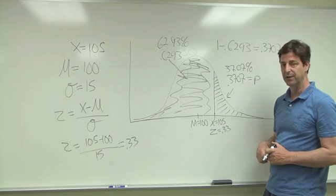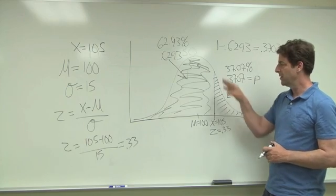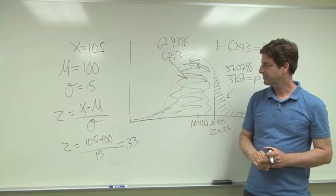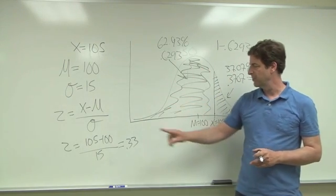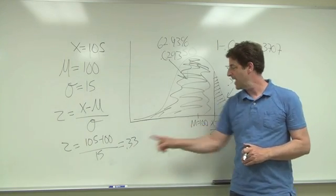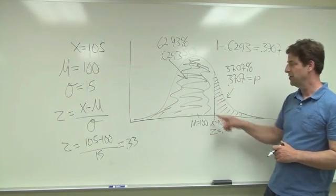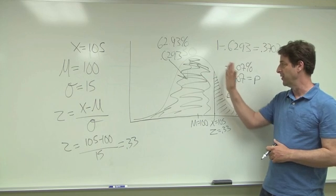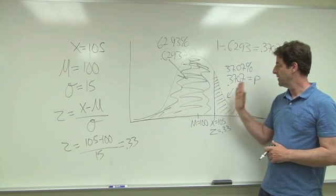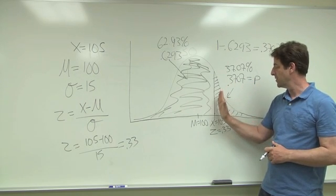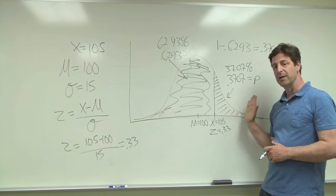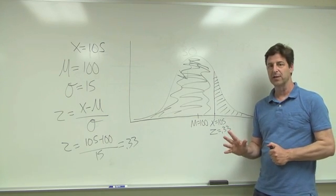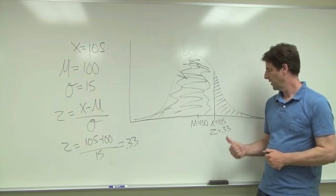And that's what a p-value means. So that's how you calculate a z-score, that is how you interpret a z-score, and that is how you use a z-score to determine the proportion of the normal distribution that falls beyond a particular z-score. A couple other things that we can do with this z-score.